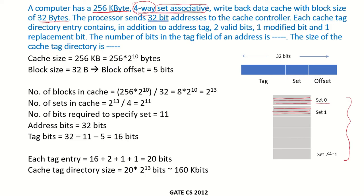The processor sends a 32-bit address to the cache controller, and each cache tag directory entry contains, in addition to the address tag, two valid bits, one modified bit, and one replacement bit. We are required to compute the number of bits in the tag field and the size of the cache tag directory.